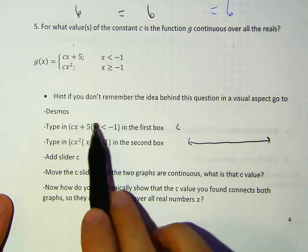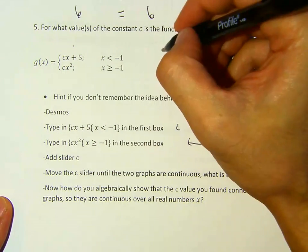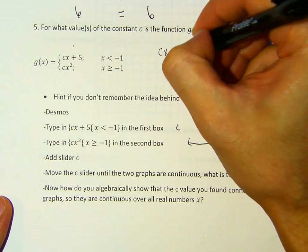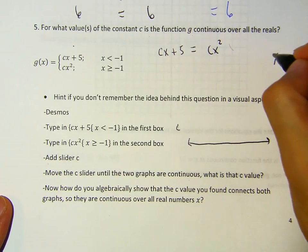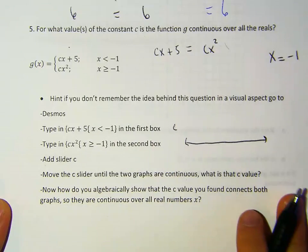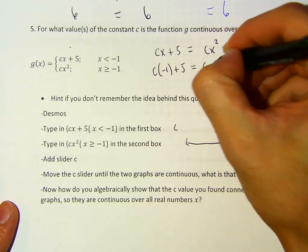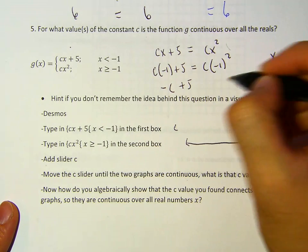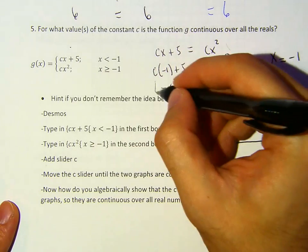And then you want to find the value of C that makes these two functions continuous. If you feel like you don't remember and then you'll find some value. But if you want to do it algebraically, all you need to do is you just say C X plus 5 equals C X squared. Right. Now here we're going to plug in X equals negative one. So when X is negative one, what is the C value?